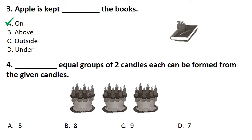Dash equal groups of 2 candles each can be formed from the given candles. Answer is option C, that is 9.